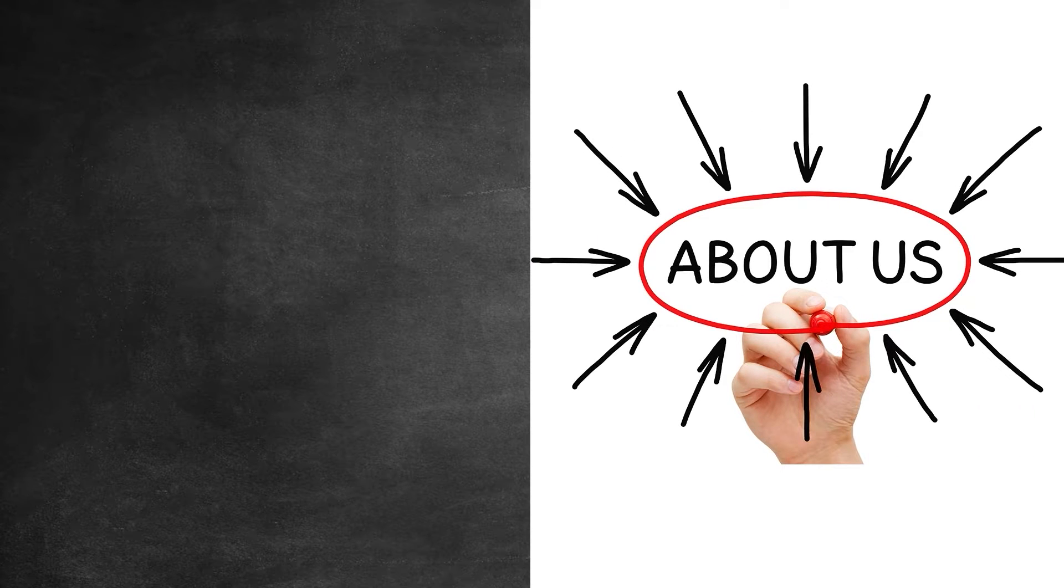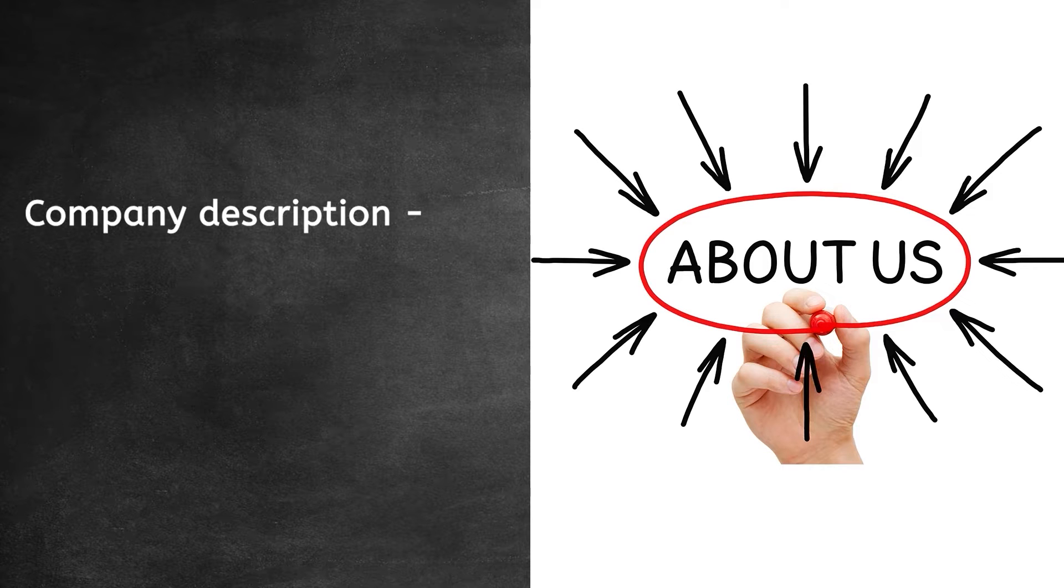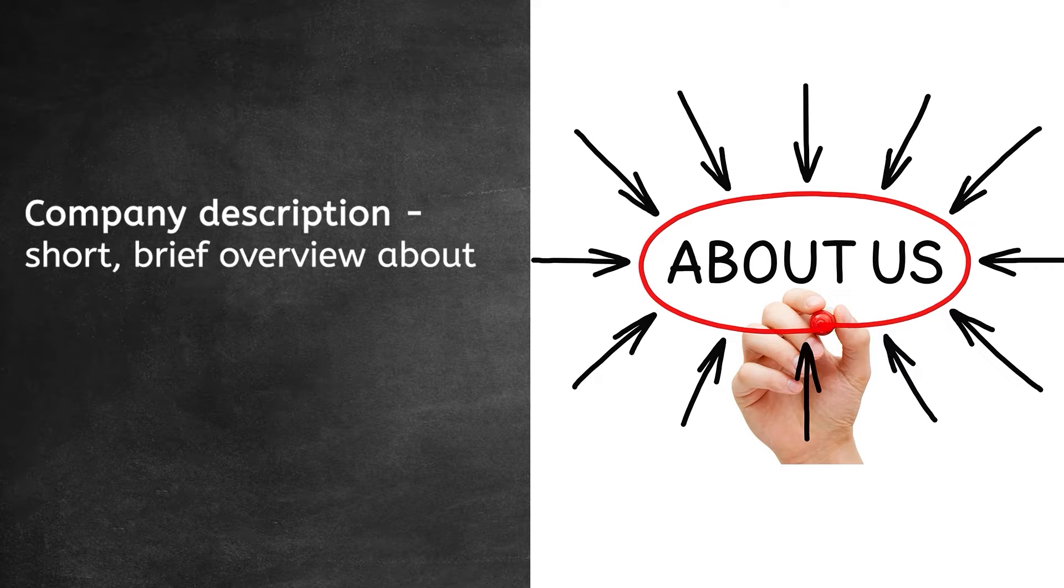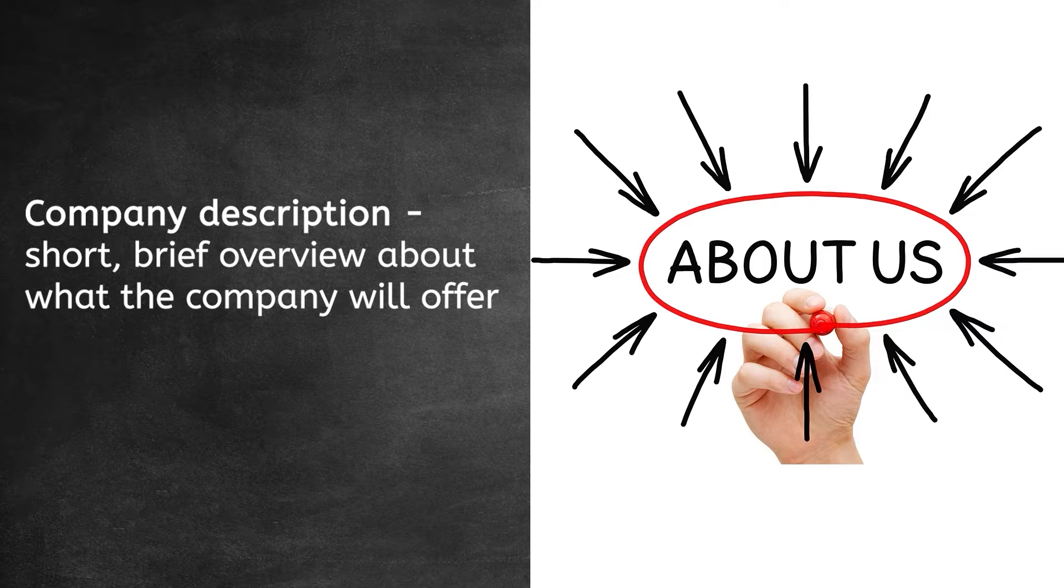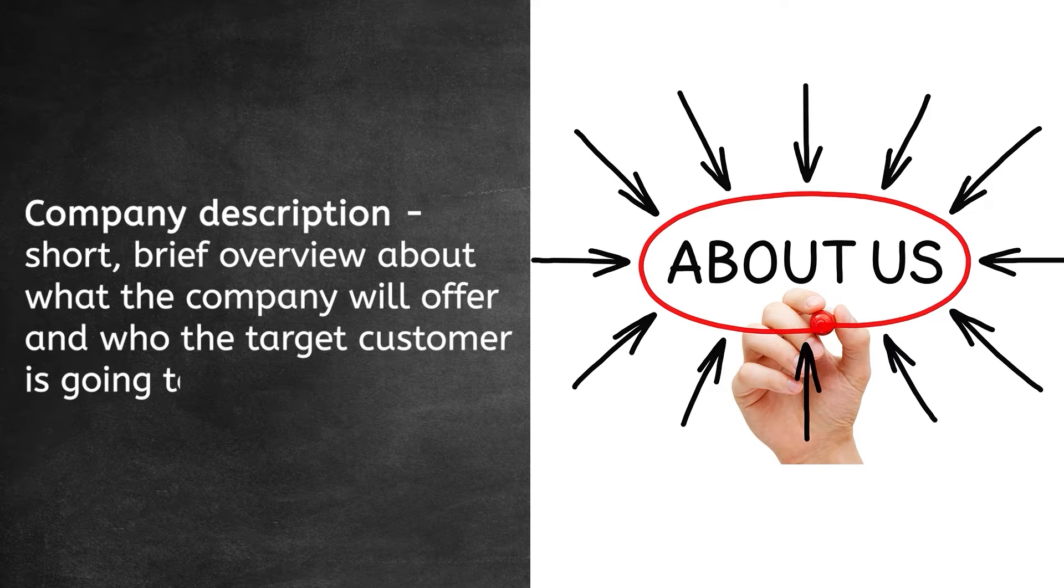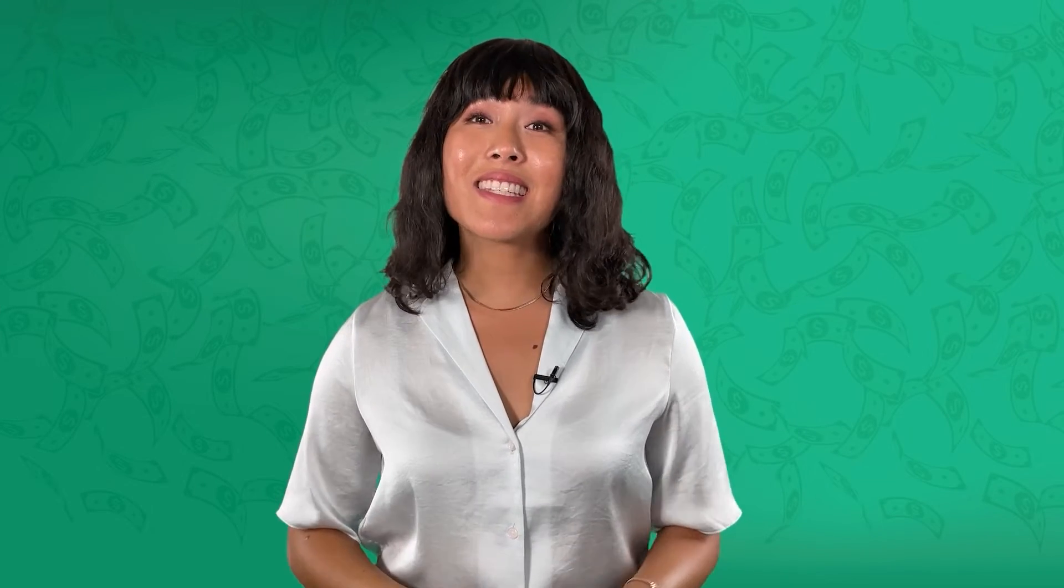After the executive summary, business plans contain a company description. This is a brief overview about what the company will offer and who the target customer is going to be. And just like the executive summary, this is designed to have the reader be eager to look at more detailed information.